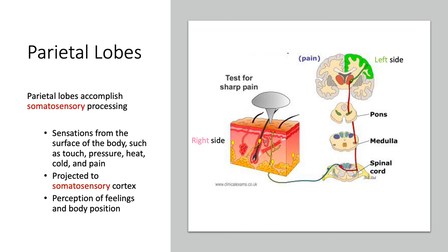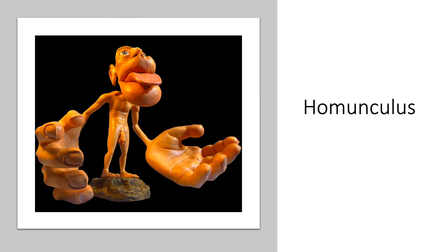Each region of the somatosensory cortex gets input from specific areas of the body. This concept is illustrated by the homunculus — meaning 'little man' — where the size of each body part indicates the proportion of cortex dedicated to that area. The homunculus has really large hands, a big tongue, and giant lips, because fine sensation in those areas requires more cortical representation. For example, people who are sight-impaired must distinguish Braille bumps between one to three millimeters apart, requiring a larger cortical area for the fingertips.